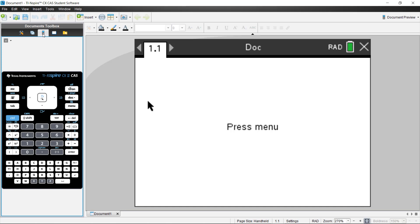First things first, I want to make sure that you understand how to get a document open or be able to insert a graph. When you first open it up, you've got this screen here from a new document that says press menu. You can press the menu key just like you would on your calculator. You can also just select the screen using your mouse.